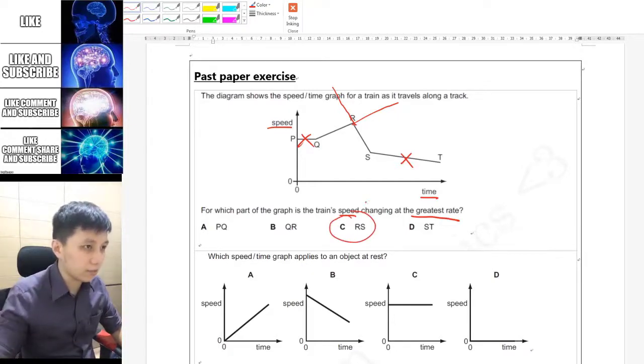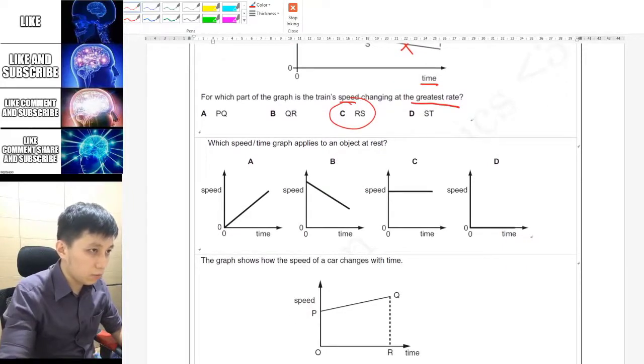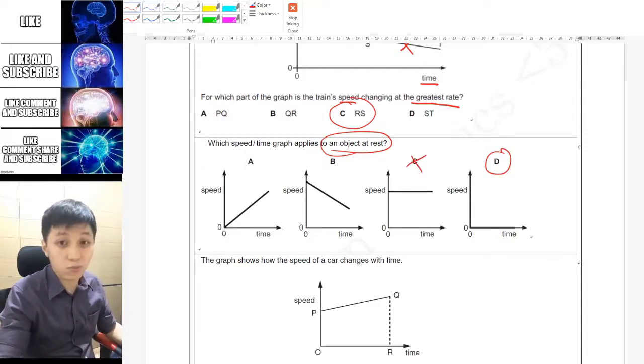For the next one, which speed-time graph applies to an object at rest? If the object is at rest, that means the speed is at zero, so the answer is D. If you chose C, it is wrong because it is still moving but moving at a constant speed.